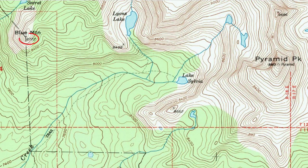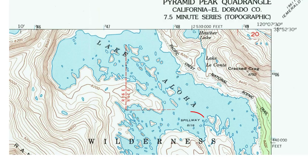The black number written across the contour lines near the peak is the measured value or benchmark of the highest point. Each peak has an X marked at the highest spot with a number indicating peak height. Measured benchmarks appear at other locations as well, such as at the spillway to Lake Aloha, noted at 8,116 feet above sea level when this map was made.